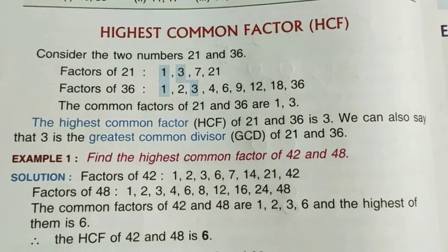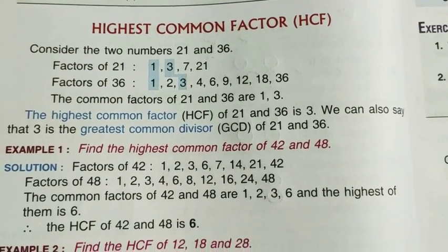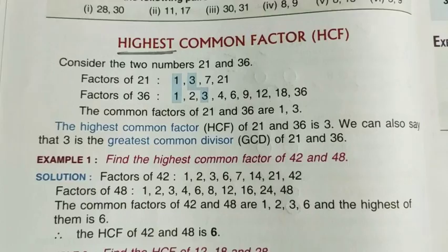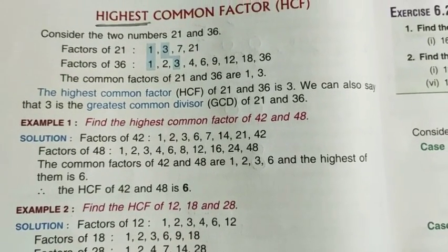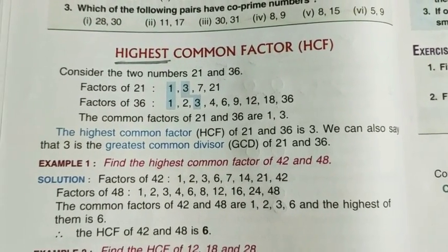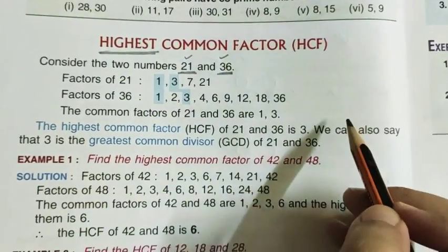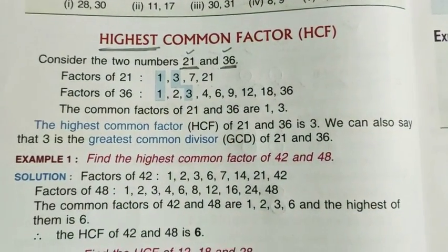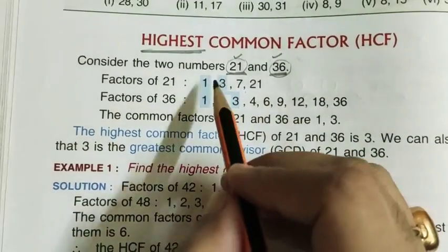Before moving on, we learnt what common factors are. Now we will look at the Highest Common Factor — among all the common factors, which one is the highest? We have to find it. Now look at here: there are two numbers, 21 and 36. First, separately, we will find the factors. The factors of 21 are: 1, 3, 7, and 21.